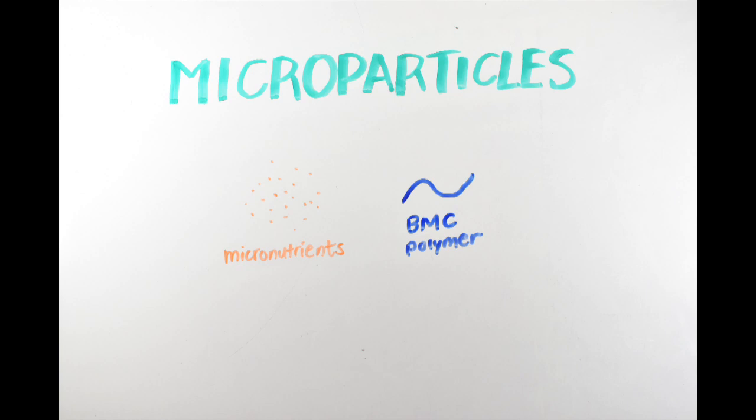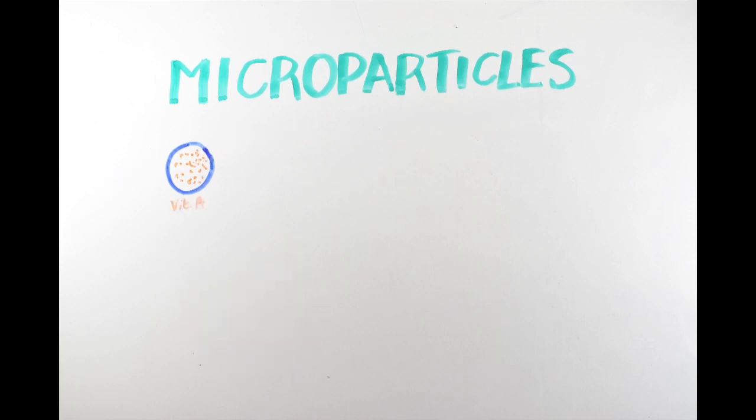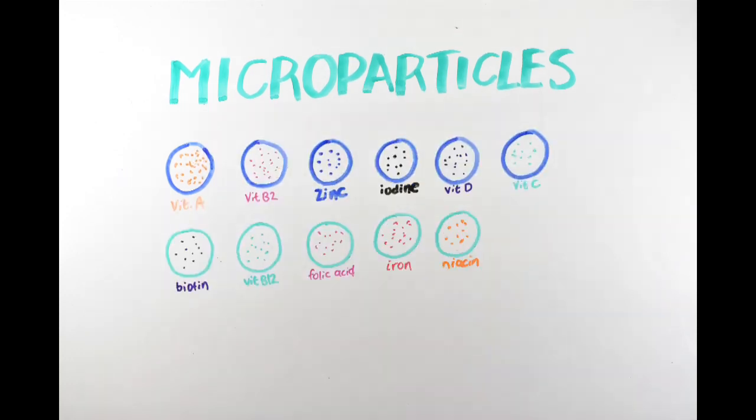The BMC polymer and micronutrients were emulsified in oil, and when added to water, a microparticle forms capturing the micronutrients inside. Scientists were able to individually encapsulate 11 different micronutrients, as well as co-encapsulate four micronutrients together. Co-packaging would allow for broader and more efficient micronutrient delivery if enacted.